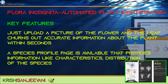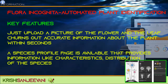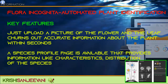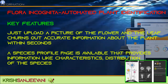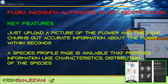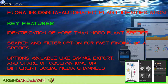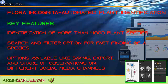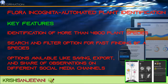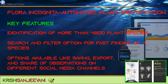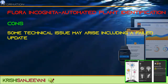Flora Incognita — automated plant identification. Just upload a picture of the flower and leaf and it sends out accurate information about the plant within seconds. A species profile page provides information like characteristics and distribution. Identifies more than 4,800 plant species, with search and filter options for fast species finding, plus options to save, export, and share observations on social media. Cons: Some technical issues may arise, including failed updates.